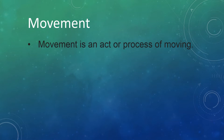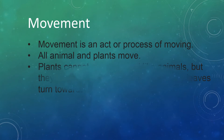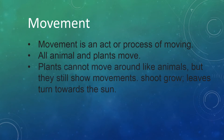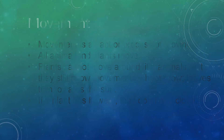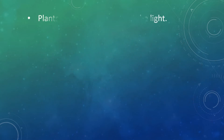All animals and plants move. Plants cannot move around like animals, but they still show movement. They grow leaves, turn towards the sun, and if a plant has flowers, they open and close. Plants move slightly towards the light.